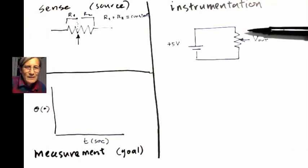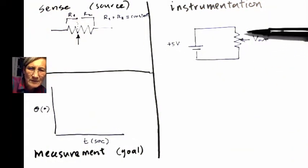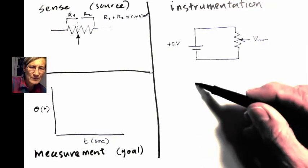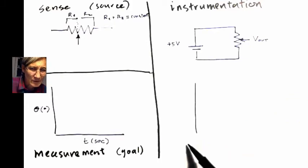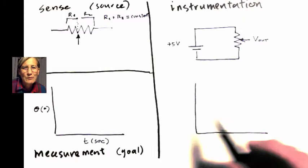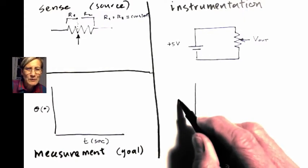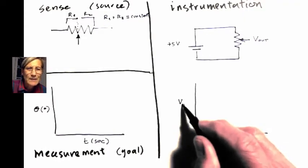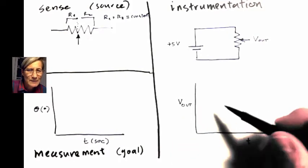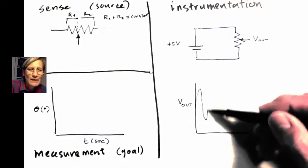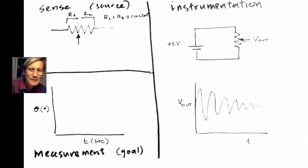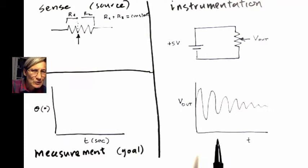So again, as the shaft rotates, essentially what this middle pin is doing is moving through the resistor that is the potentiometer. So what that's going to give us is, as we monitor V out from the potentiometer, we're going to see that the voltage will vary with time in a way that we kind of expect. It's going to be sort of a dissipating pendular motion.